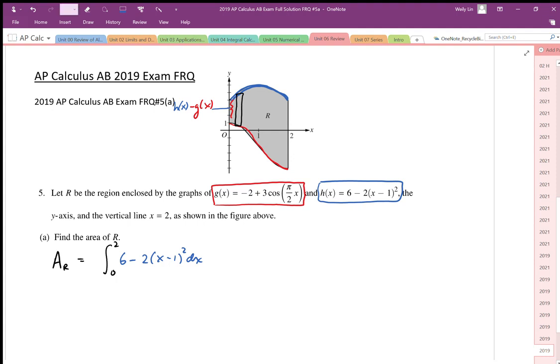And that's going to be minus the integral from 0 to 2 of negative 2 plus 3 cosine of pi over 2 x dx.